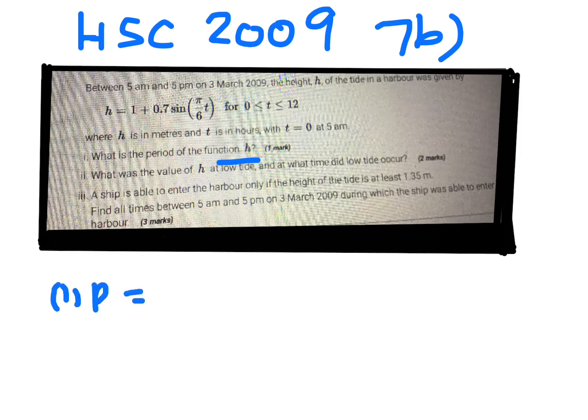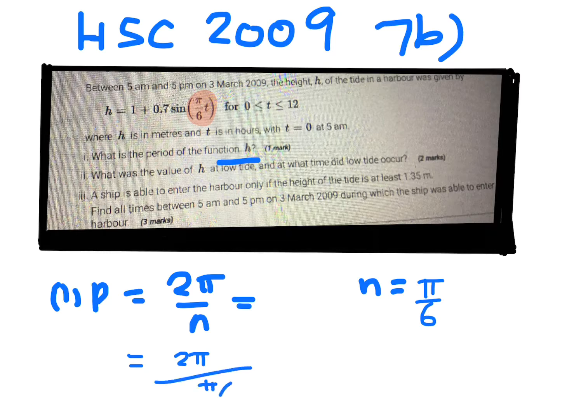So the period for a sine function is 2π over n. So n in this case will be the number that is in front of the t. So n in this case will be π on 6.